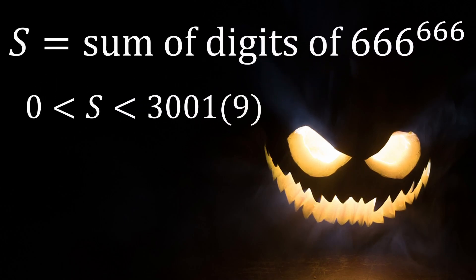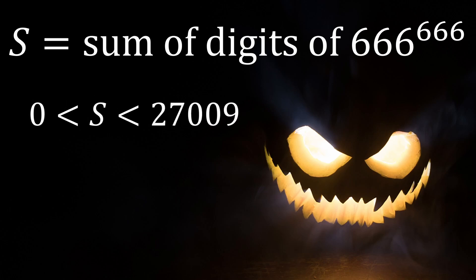If we imagine that all 3001 digits are 9s, we arrive at an upper bound on the sum of digits S. S is therefore between 0 and 27009.